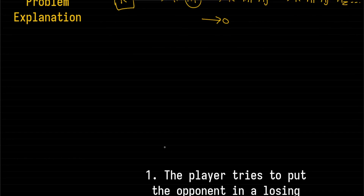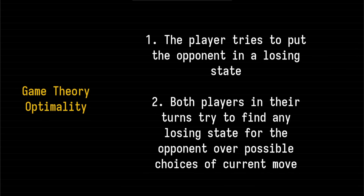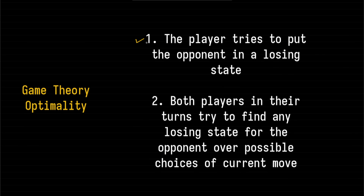The main idea for solving any type of game theory problem is to consider these two conditions for optimal play. First, the current player tries to put the opponent in a losing state. Second, each player in their turn tries to find any losing state for the opponent over all possible choices available to that player.